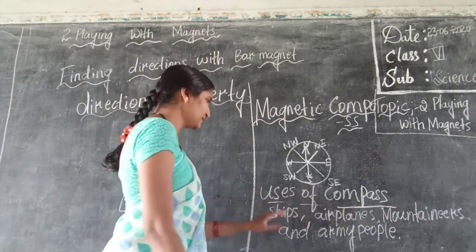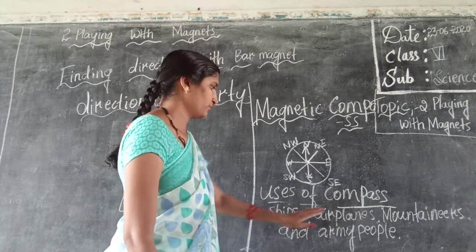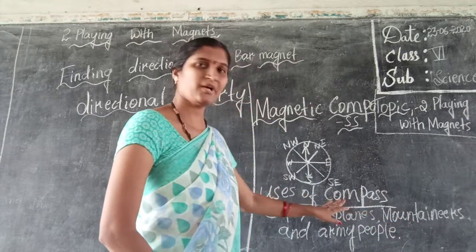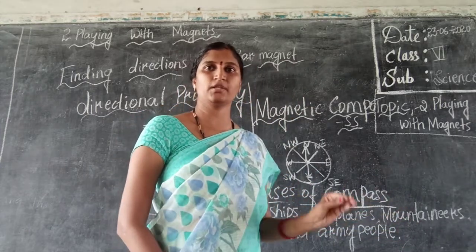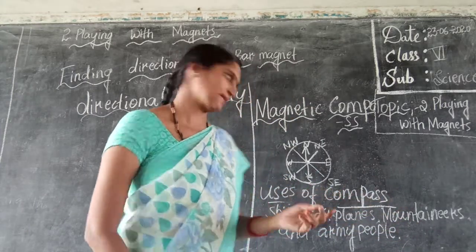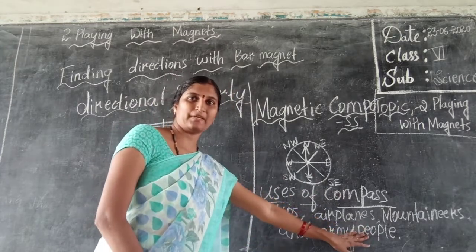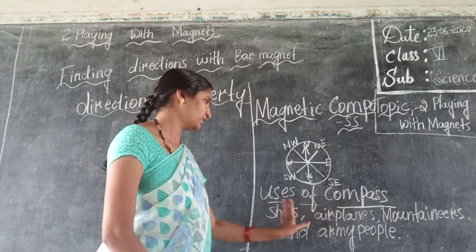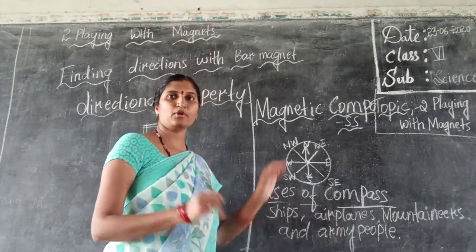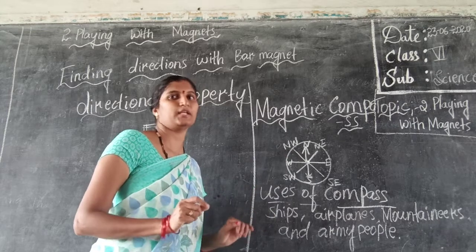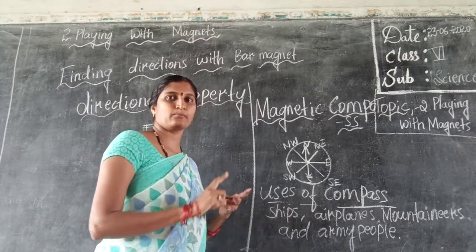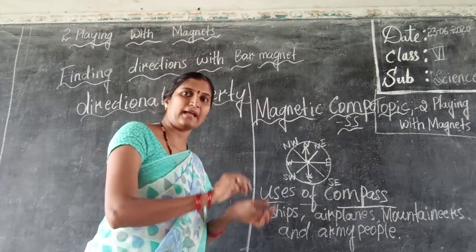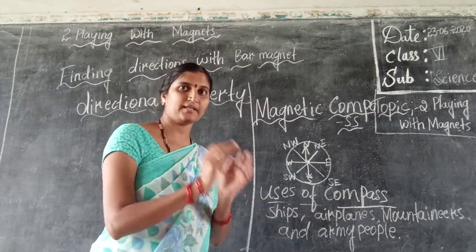The uses of the compass are: it is used in ships, airplanes, and by mountaineers — because mountaineers carry a compass to know the direction so that they do not get lost. Army people also carry a compass. One more thing to remember: a magnet and a compass should not be placed together at the same place.